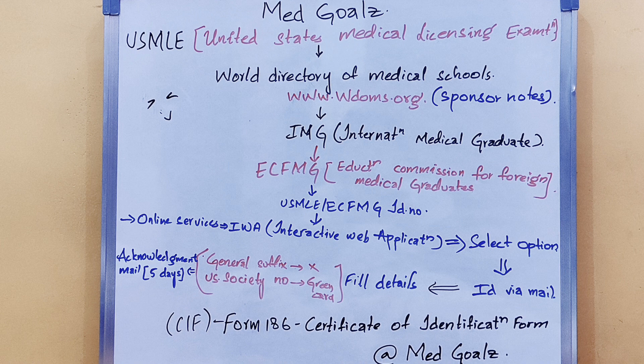The first thing for applying is that the process needs a USMLE or ECFMG identification number. For that, you should go to the ECFMG online website — I'll give it in the description below. In that site, click IWA (Interactive Web Application) and select the option of whether you are new or already registered. Most of you will be new, so fill in the details and you will get this ID number via email.